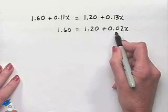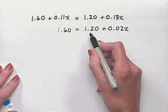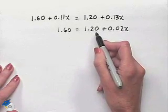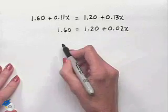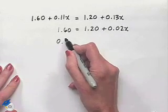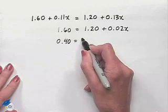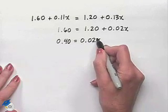Next, to isolate the X term, we're going to subtract 1.20 from both sides of the equation. Subtracting $1.20 from $1.60 would leave us with .40 cents.